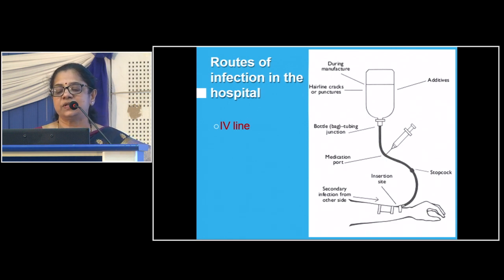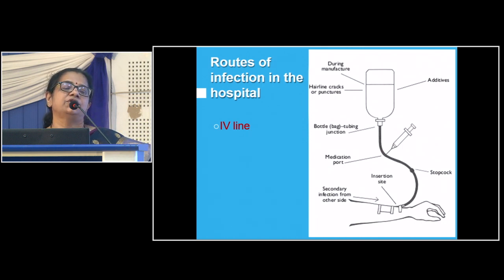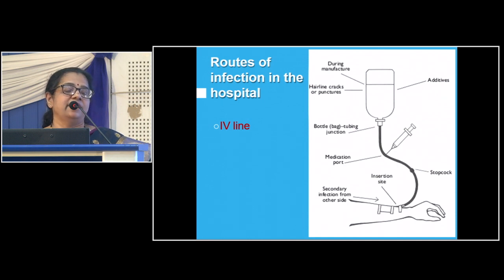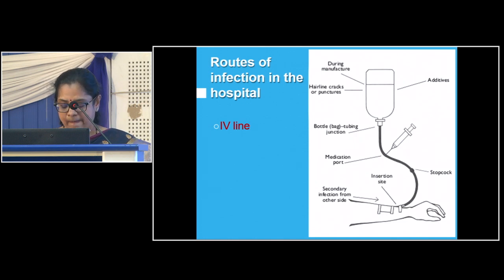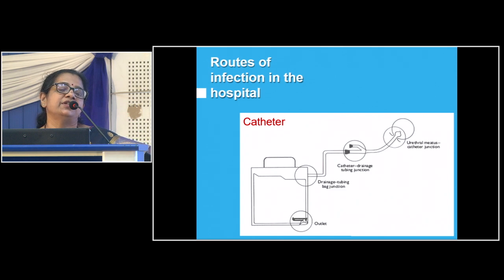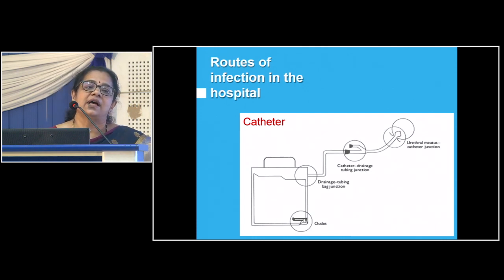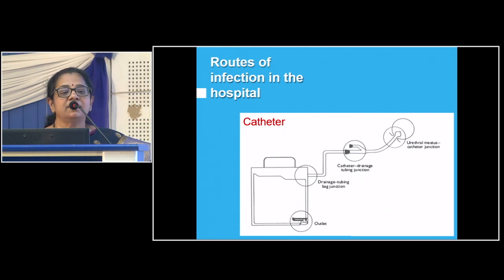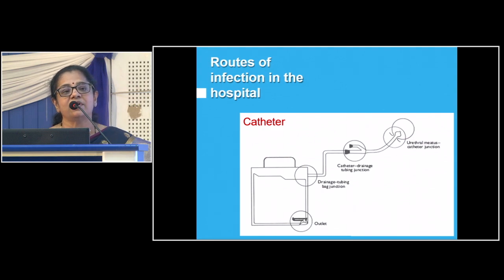Routes of infection in the hospital include IV lines. If you are not changing your IV line frequently, or if you touch the IV line with contaminated hands or linen, you can spread the infection — MRSA easily spreads this way, and ESBL, Klebsiella, and Pseudomonas can also cause bloodstream infections. The catheter associated urinary tract infection: indwelling catheter should be changed once in 48 hours. Otherwise there can be ascending infection in the urinary tract caused by E. coli, Klebsiella, and Pseudomonas, which can cause hydronephrosis, pyelonephritis, and even renal failure.